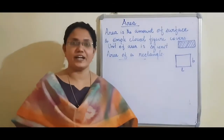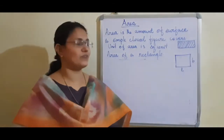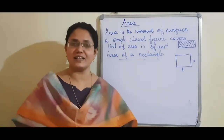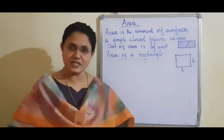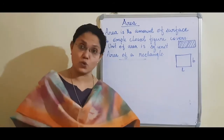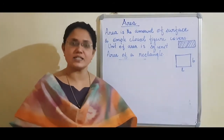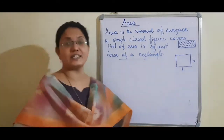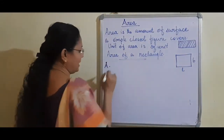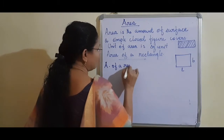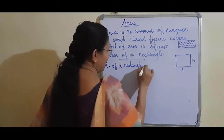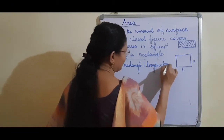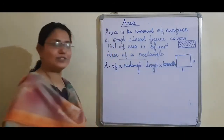Today we are studying area of a rectangle and area of a square. First, we study area of a rectangle. You know that the opposite sides of a rectangle are equal. If one side is denoted by length, its opposite side is also length. If the other side is breadth, its opposite side is also breadth. Area of a rectangle — denoted by A — equals length into breadth.